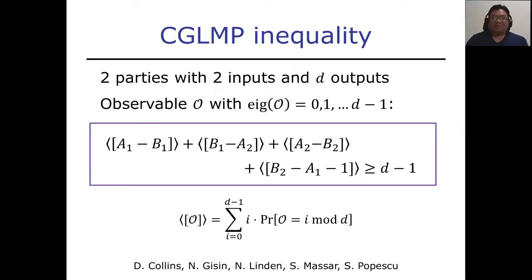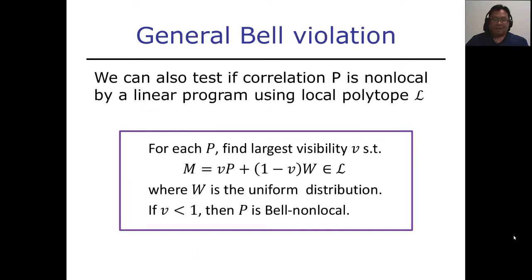Here we want to consider the Bell violations for two inputs and d outcomes. And the canonical Bell inequality for this scenario is called CGLMP. If you write the observables with eigenvalues 0 up to d minus 1, then we can write CGLMP in this form.